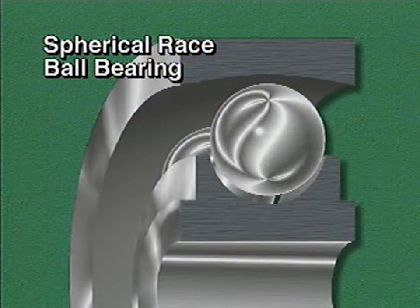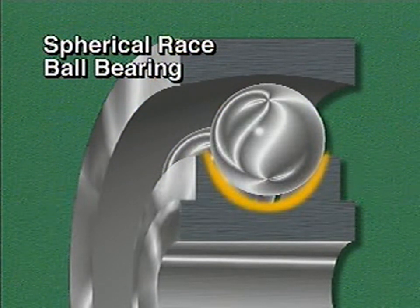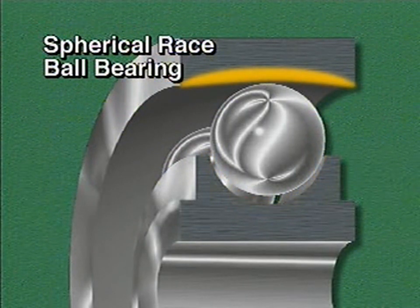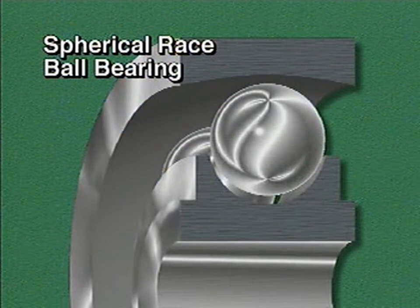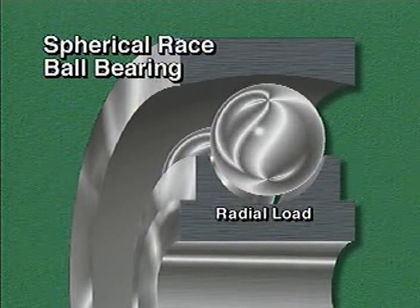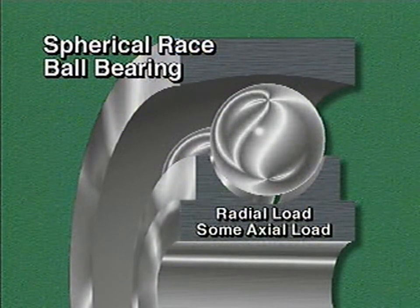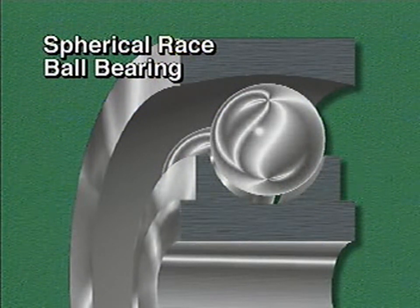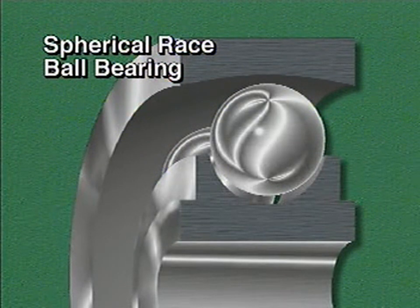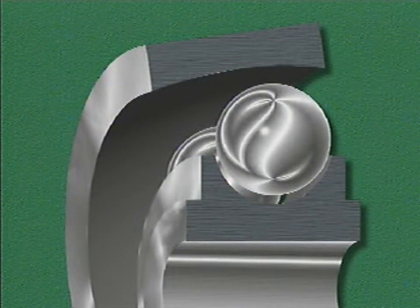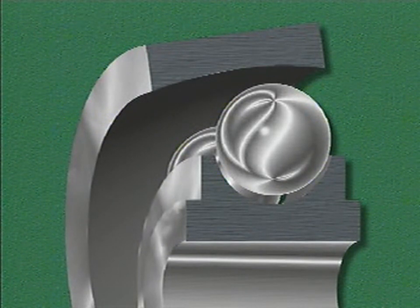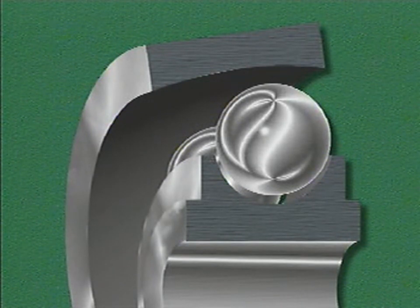This is a spherical race ball bearing. It has a deep groove in its inner ring, but the surface of its outer ring is shaped like part of a sphere. This type of bearing is designed primarily for radial loads, but it can carry some axial load. Spherical race ball bearings are called self-aligning bearings because they can adjust to some misalignment. Misalignment is a condition in which one ring of a bearing is out of line with the other ring. The shape of a spherical race ball bearing allows it to handle a small amount of misalignment.